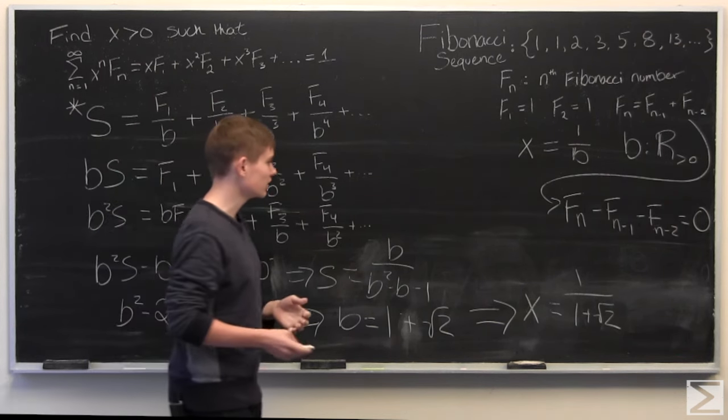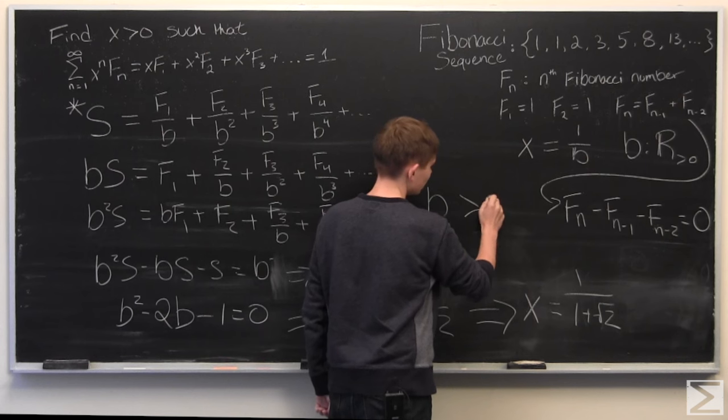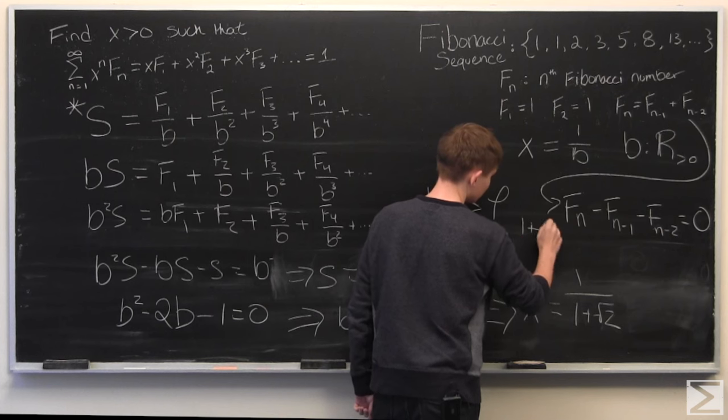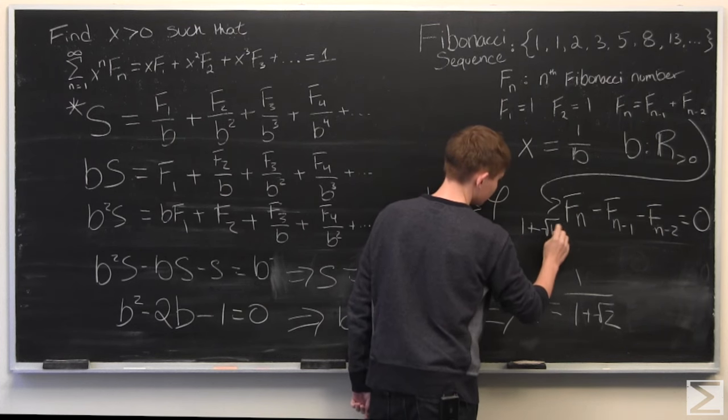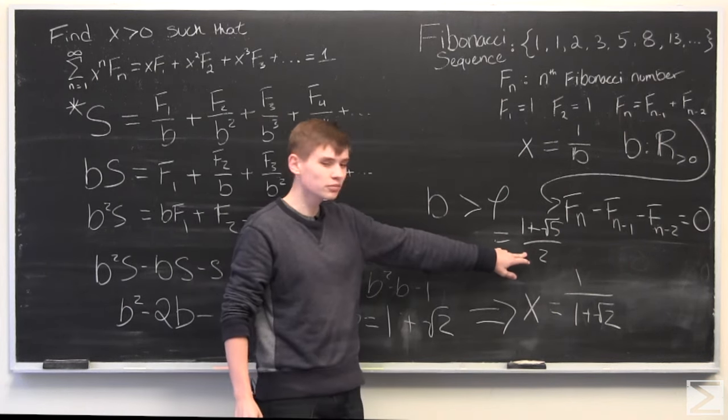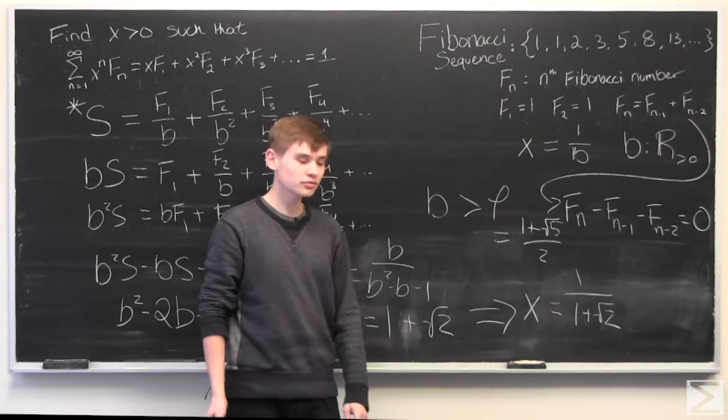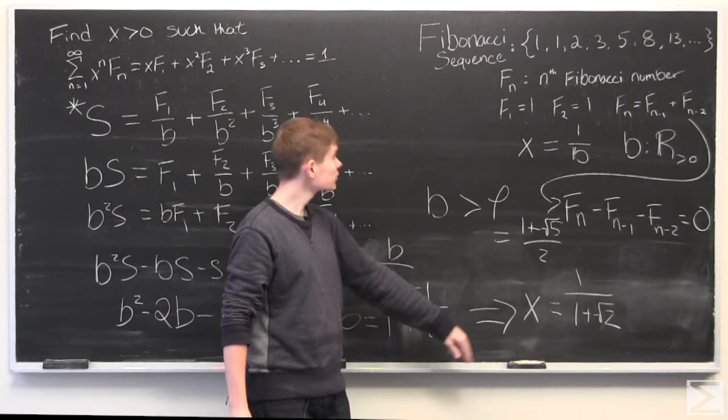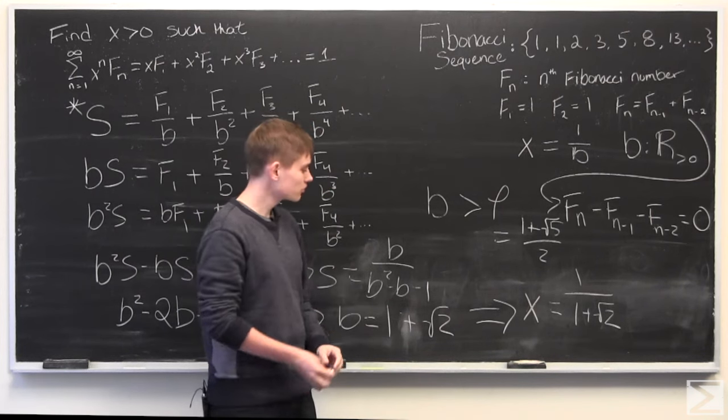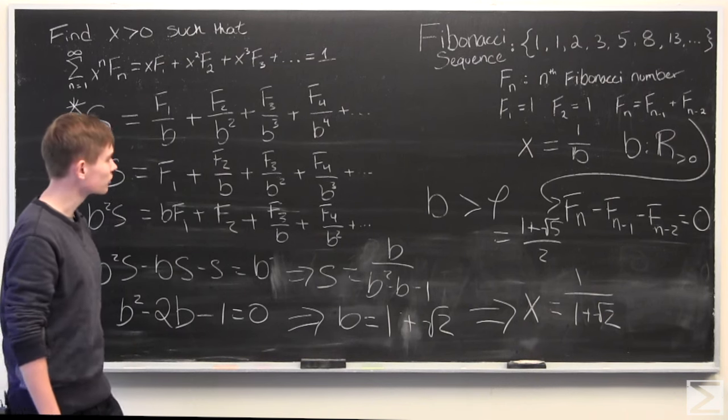But what I will say is that this will converge for b greater than the golden ratio, which is 1 plus root 5 over 2. So, as long as b is greater than 1 plus root 5 over 2, which b equal to 1 plus root 2 satisfies this, this will converge. And therefore, x equal to 1 over 1 plus root 2, if you plug that into this infinite sum, will converge to 1.